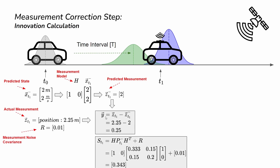Now we calculate the residual and the residual covariance. The residual is 25 centimeters. The innovation covariance S is computed from the H matrix dot product with the predicted covariance multiplied by the transpose of H, plus the measurement noise covariance R. Since the dimension of the measurement vector is one, S is a one-by-one matrix, giving us a scalar value.